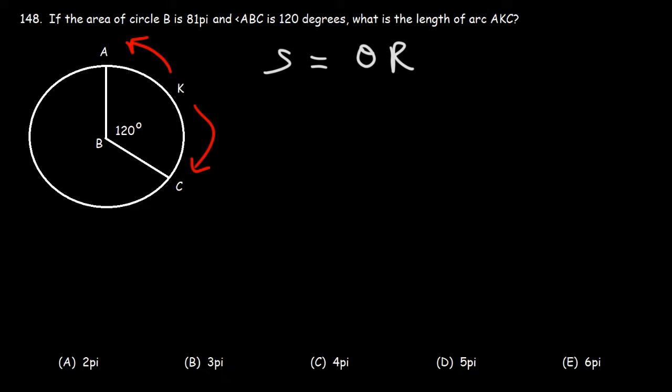Now, the angle theta has to be in radians. We have the angle in degrees, so we need to convert it. Multiply 120 degrees by pi over 180, and that should do the trick.